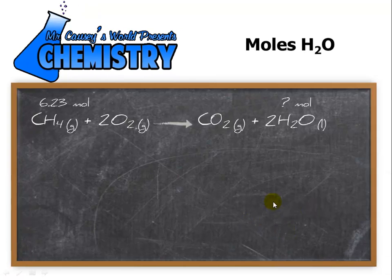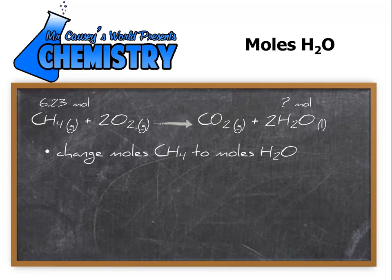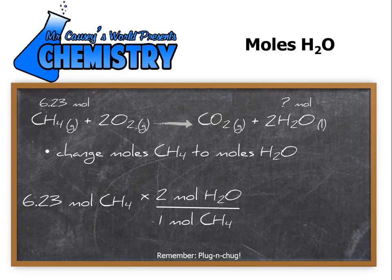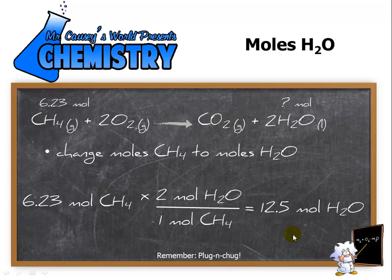Now let's do the moles of water. Again, we start with a balanced equation. And we're going to take and use the methane, which is 6.23 moles, and determine how many moles of water we'll get. Now notice in this one, it's a 2 to 1 ratio. So it's going to involve a little bit more math, but still not too hard. Change moles of methane to moles of water. We have 6.23 moles of methane times 2 moles of water for every mole of methane, and that comes right from these numbers right here. We don't write one, but just like in algebra, it's still assumed. And that will give us 12.5 moles of water.